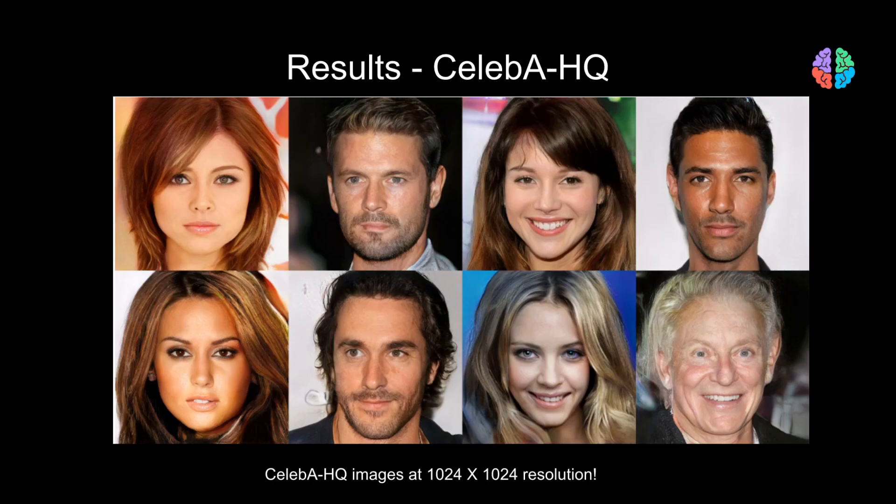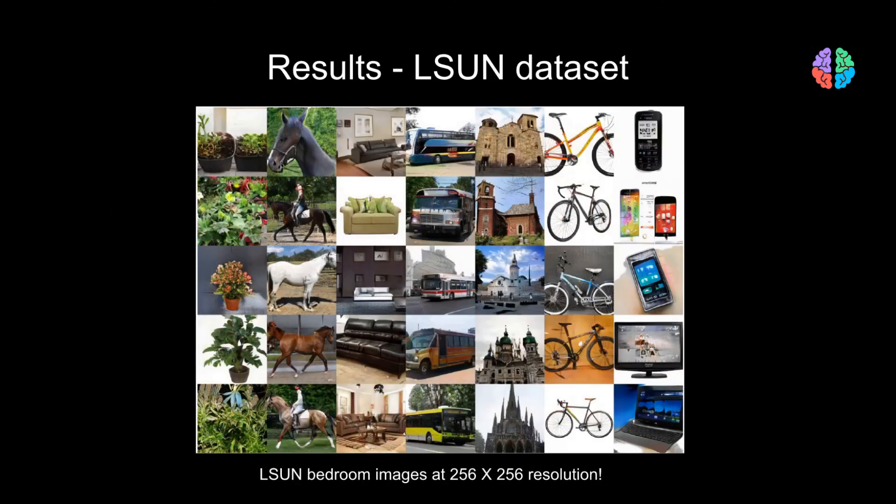These are some of the hand-picked results. These are amazing. I mean, I would find it hard to accept that these people don't exist in reality. Just to show that it is possible to generate a variety of objects and not just faces, these are results on the LSUN dataset and they are equally mind-blowing. I mean, you can see the shadow of a phone kept under the sun. Wow!